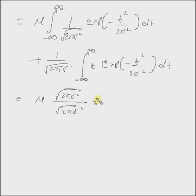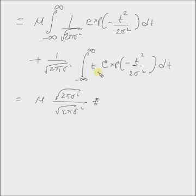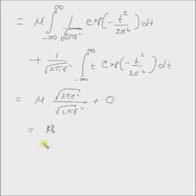The second term is an integral over an odd function. If you notice, for t less than zero the function is exactly the same as the function for t greater than zero but with the opposite sign, hence the integral is zero. Therefore the integral on the left hand side of equation one is μ. Hence the mean of a Gaussian distribution is given by the parameter μ. Thanks so much.